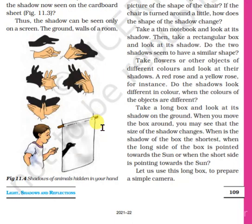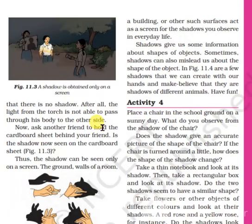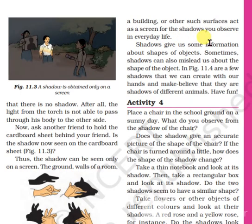Thus, a shadow can be seen only on a screen. The ground, walls of a room, a building, or other such surfaces act as a screen for the shadows you observe in everyday life.